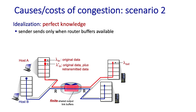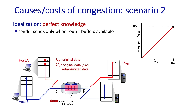For this case of finite buffers, let's start with an idealized scenario where the sender magically knows whether there will be free buffer space for a transmitted packet. So no packets are lost. The source sends a packet, it's buffered at the router, eventually transmitted, and received at the receiver. The throughput lambda_out on the y-axis equals lambda_in — no problems, except for the queuing delays as lambda_in approaches R/2, just as in our first scenario.